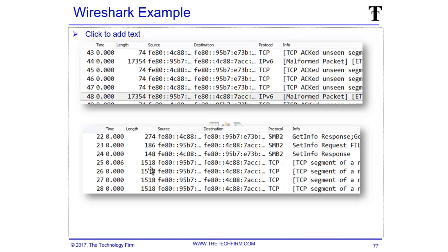So if this was a legitimate jumbo-size packet, you wouldn't see these TCP ACK unseen segments — that's the dead giveaway. I hope that helps. Have a good day.